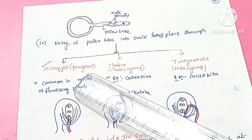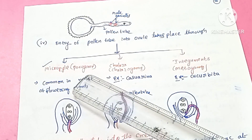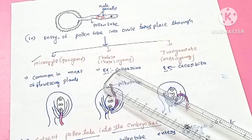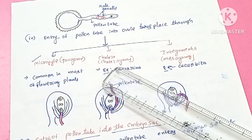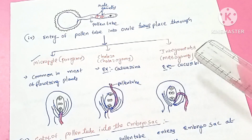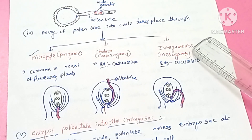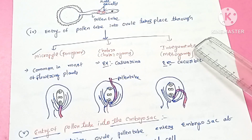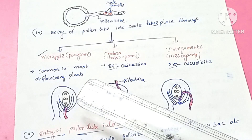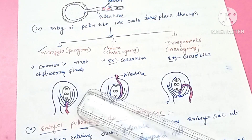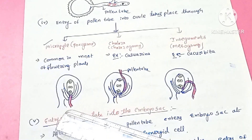If the pollen tube travels through the micropyle, it is called Porogamy. If the pollen tube travels through the chalaza, it is called Chalazogamy. If the pollen tube travels through the integuments, it is called Mesogamy. Porogamy is the most common process — most flowering plants use this process.